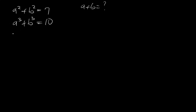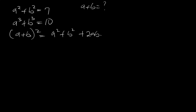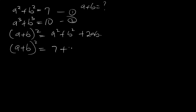What we are going to do is: a plus b, squared, is the same thing as saying a squared plus b squared plus 2ab. Since a squared plus b squared is equal to 7, this expression now becomes: a plus b squared is equal to 7 plus 2ab.